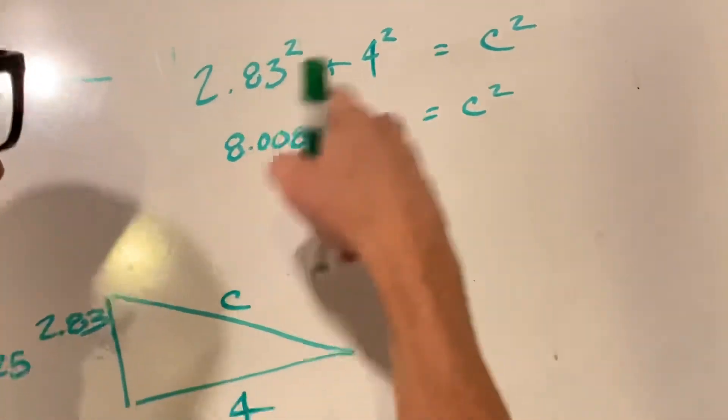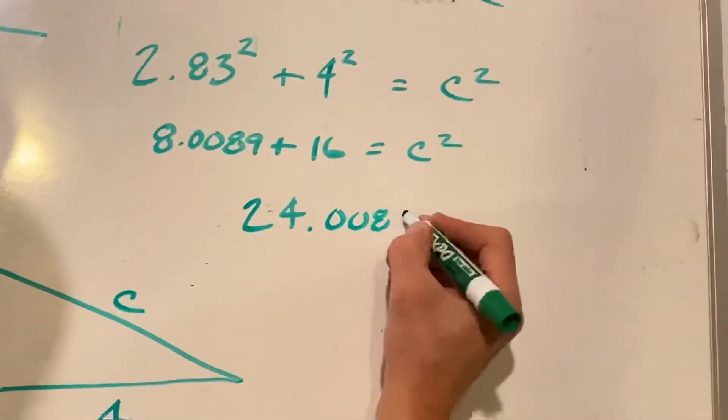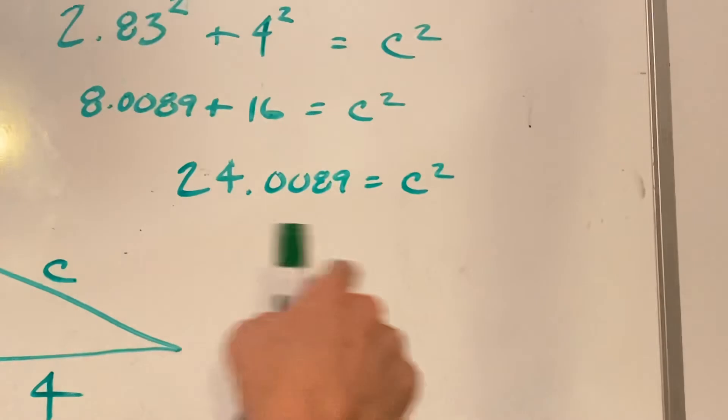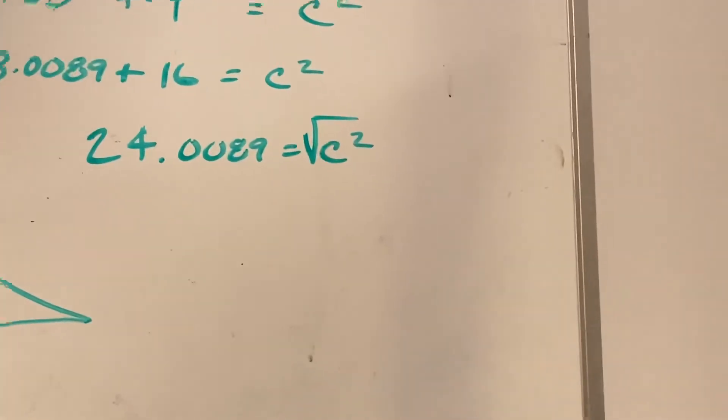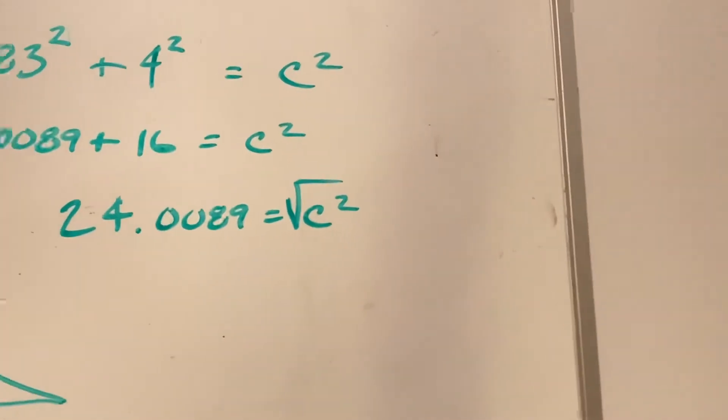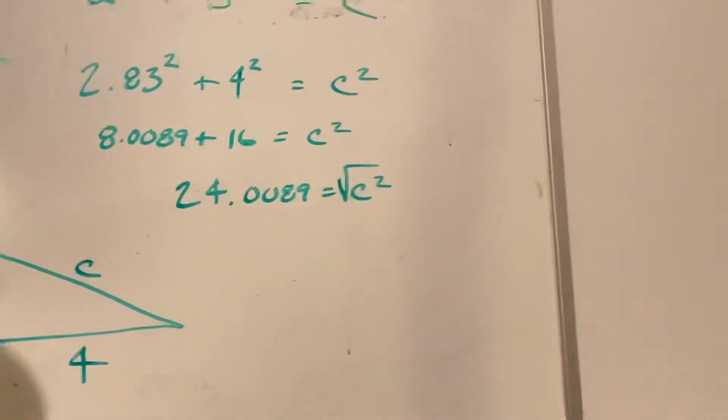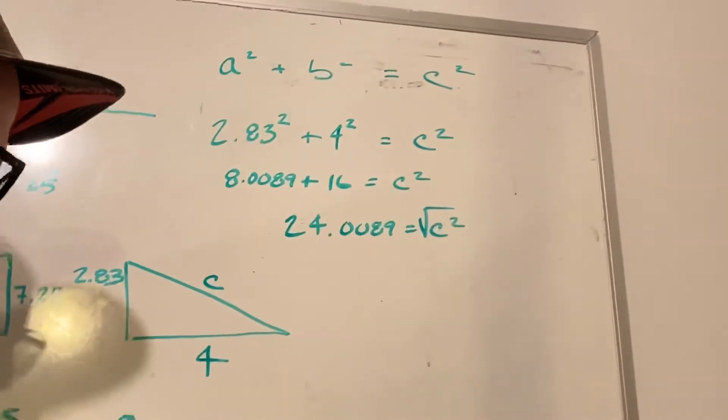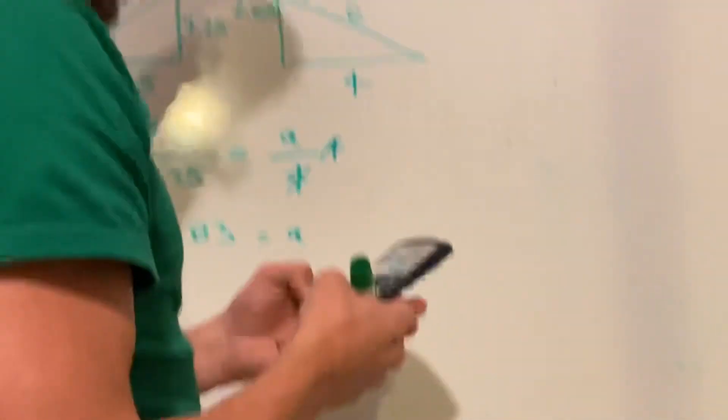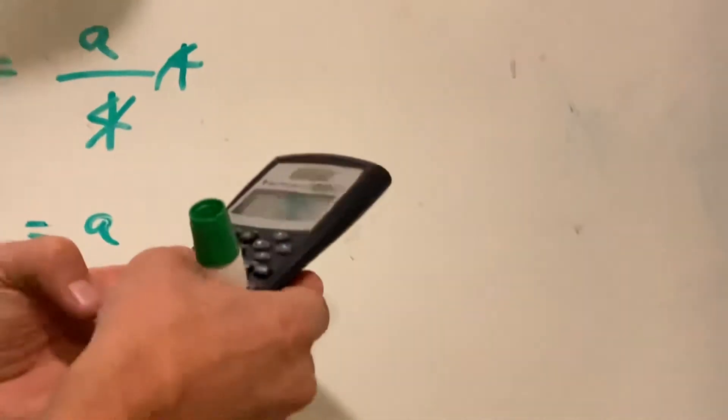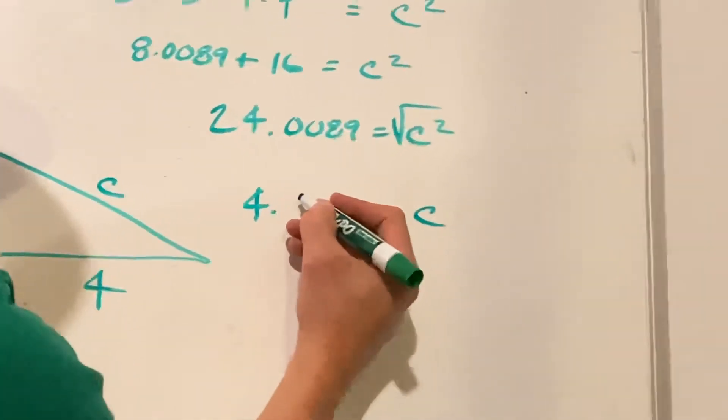And if we add these together, that will give us c squared. So added together, a squared and b squared is 24.0089. And that is equal to c squared. We just want to solve for C so that we know what this hypotenuse is. And so to solve for that, we're just going to take the square root of c squared. Then c equals 4.899. It's basically 4.9.